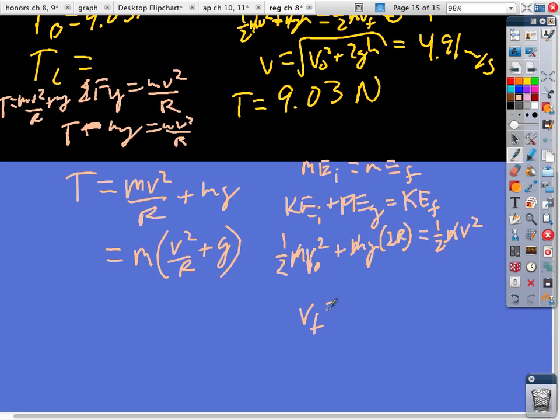and I get v final is equal to the square root of v zero squared, once again, plus 2g, 2r.